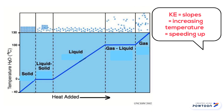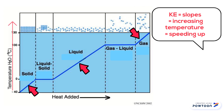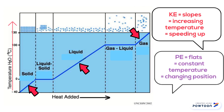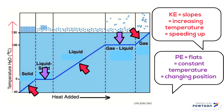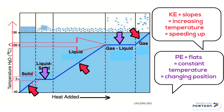To sum up: kinetic energy happens on the slopes — it means temperature is increasing and the particles are speeding up. Potential energy happens on the flat portions of the graph — it means there's a constant temperature and the particles are changing position. Make sure you study for your quiz.